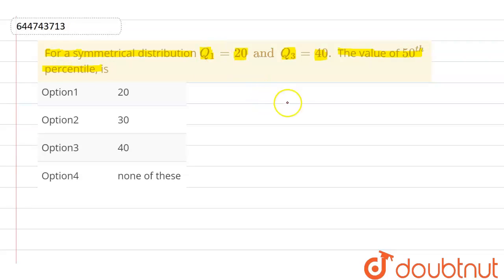First, writing the given information: Q1 is 20 and Q3 is 40. We need to find the value of 50th percentile. Now, P50 means 50th percentile. P50 equals median, and the formula is Q3 plus Q1 divided by 2.